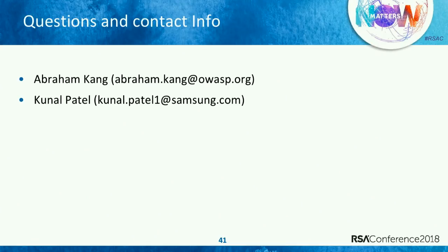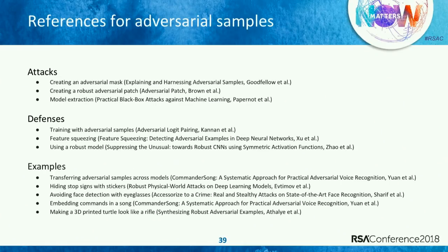How long has your research been ongoing? The research — by other people — has been ongoing for about a decade, mostly for more shallow models. I don't know exactly how long research for attacking deep neural networks has been ongoing, but there's been a huge amount of very novel research done in the last four to five months — a lot of these papers came out very recently. If there are no more questions, thank you very much for coming to our talk.